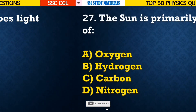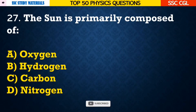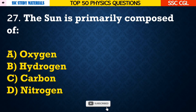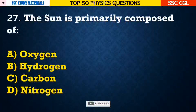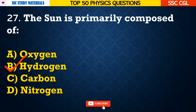Question number 27: The sun is primarily composed of — Answer B. It is mainly composed of hydrogen.